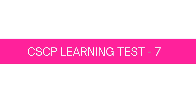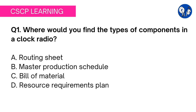Hello viewers, welcome to my channel. Hope you are enjoying all my videos. Let's start with test 7. Question number one: where would you find types of components in a clock radio? Option A: routing sheet. Option B: